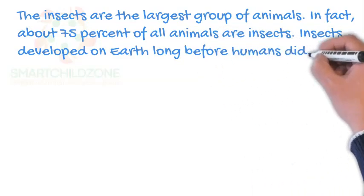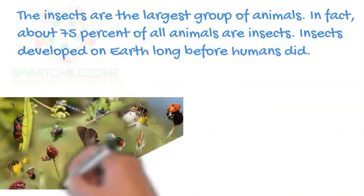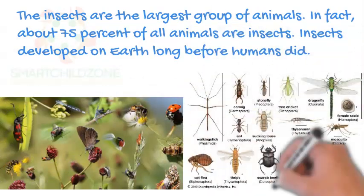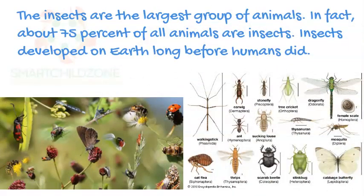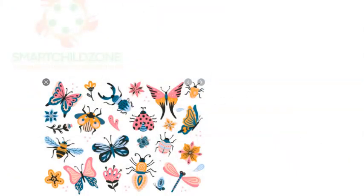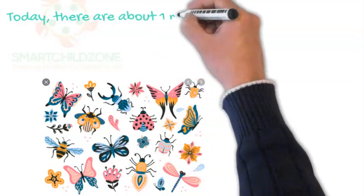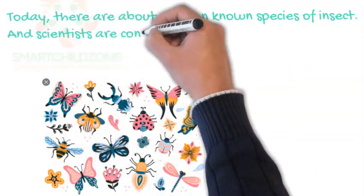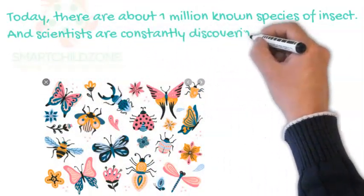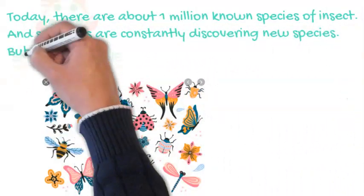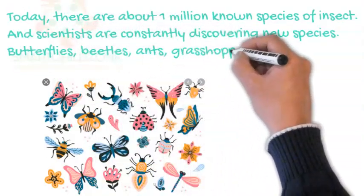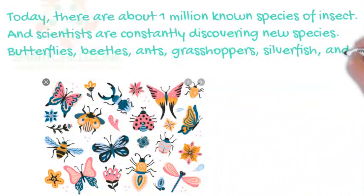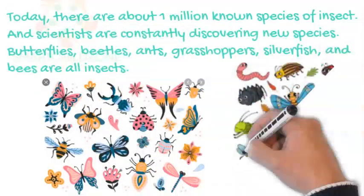Insects developed on Earth long before humans did. Today there are about 1 million known species of insect, and scientists are constantly discovering new species. Butterflies, beetles, ants, grasshoppers, silverfish, and bees are all insects.